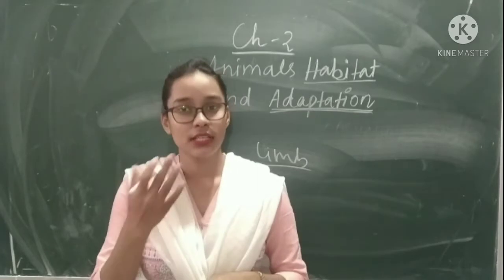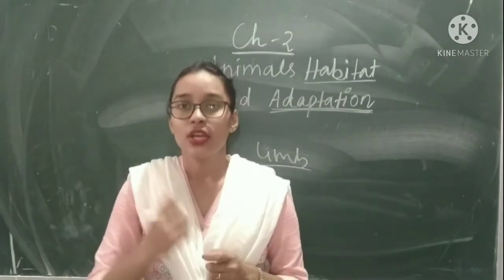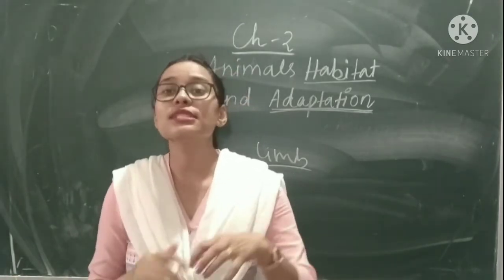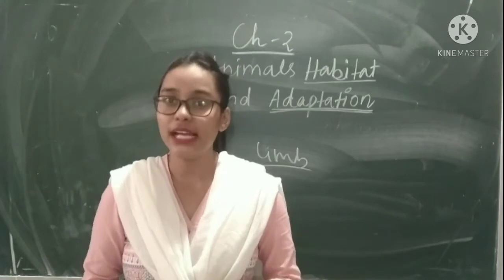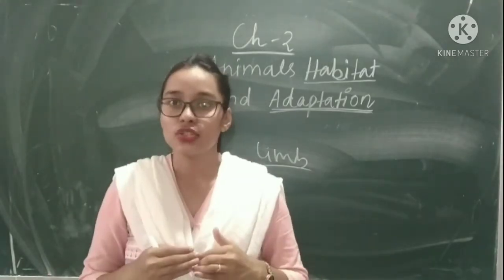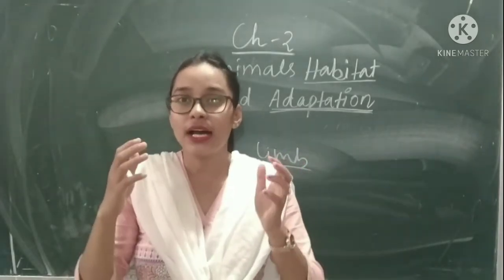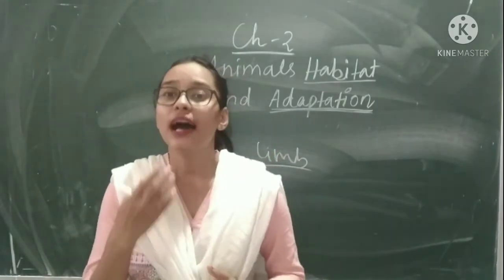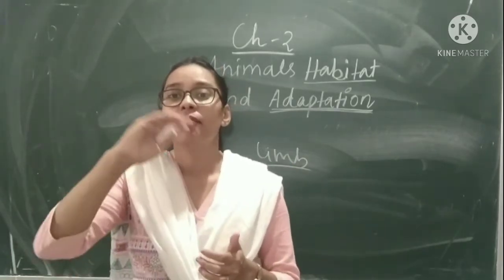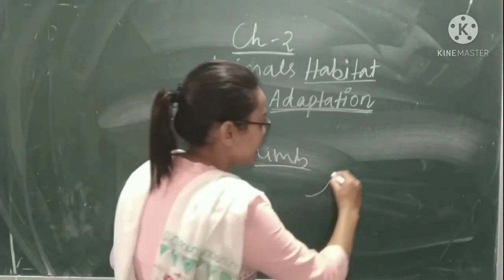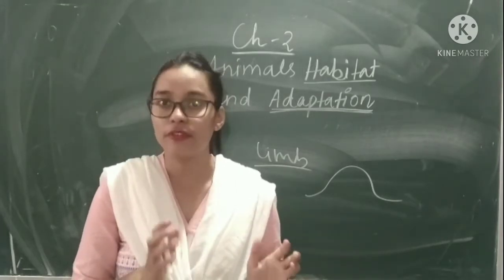Let us take the example of camel. To survive in that habitat, camels have broad feet to walk in loose sand. They have long legs to keep their body far away from the sand. They have long eyelashes which prevent the entry of sand into their eyes. On the back side of their body, a big hump is present, which stores water and food for future use.